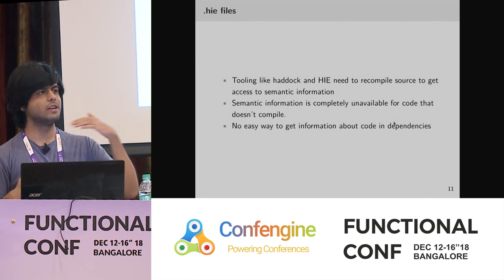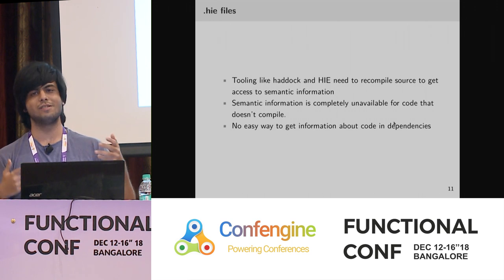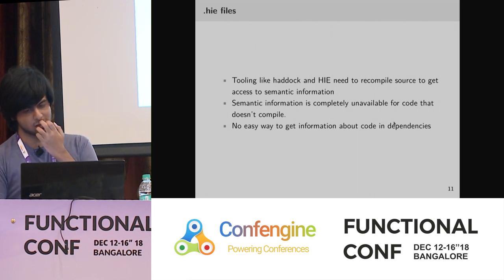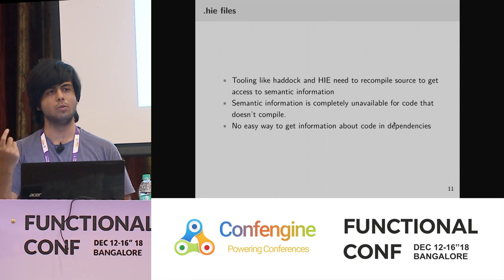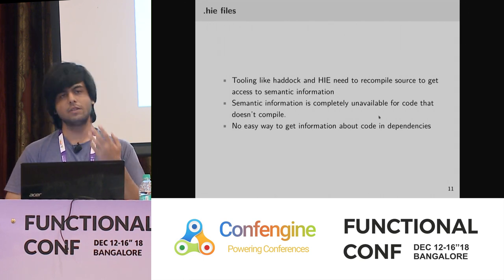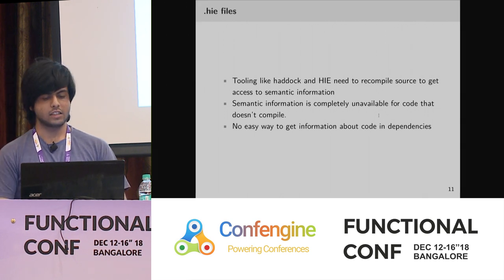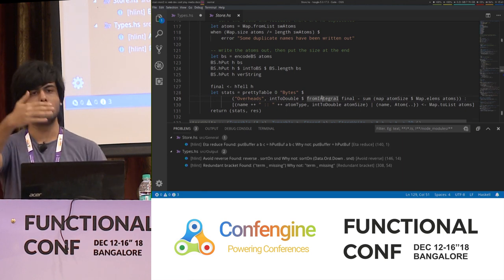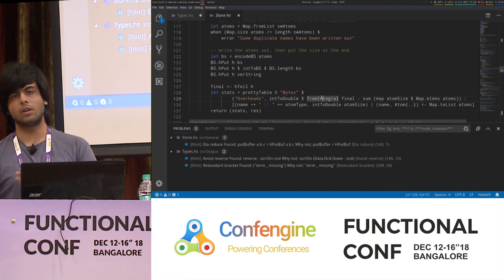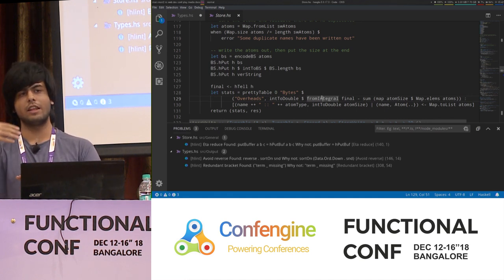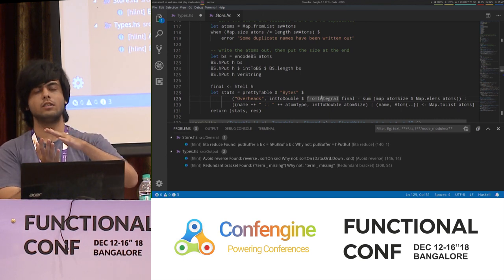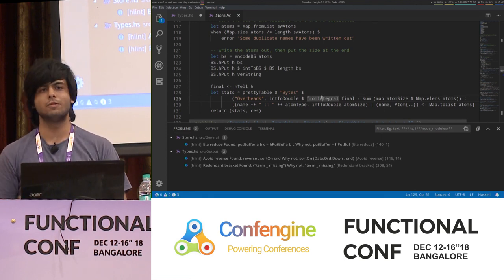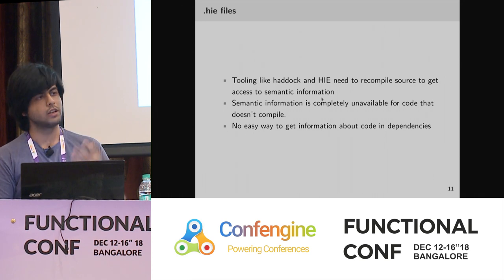These .HIE files contain different kinds of information about your source so that tooling can read that instead of asking GHC to compile everything once more. And even if you have dependencies, HIE currently cannot tell you where, for example, fromIntegral is being used in your dependencies. What HIE files will allow you to do is scan all your dependency tree for .HIE files, collate all your dependencies together, and show you where a function is being used in all those places.